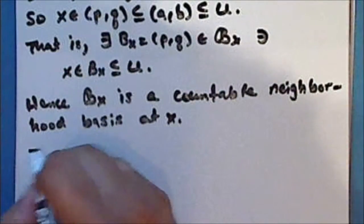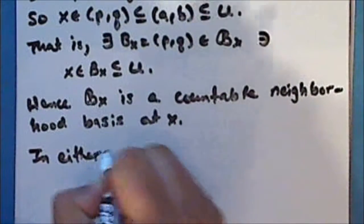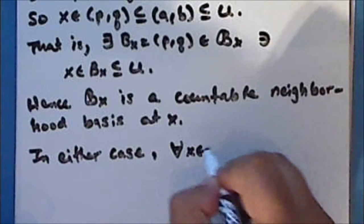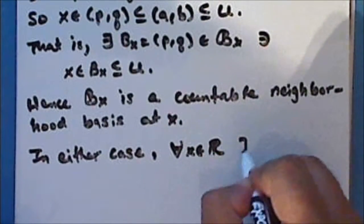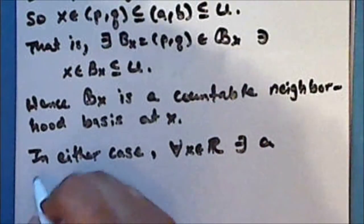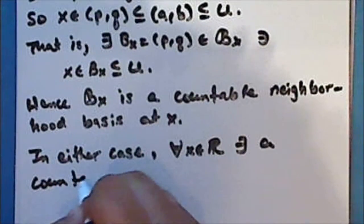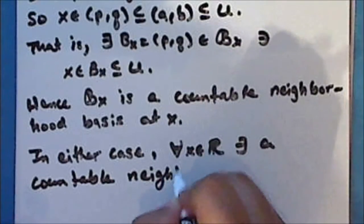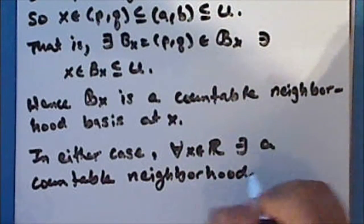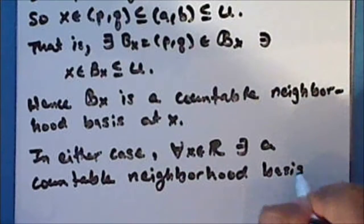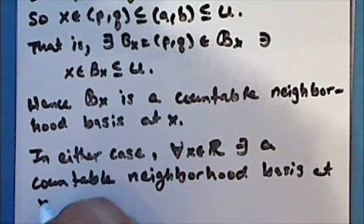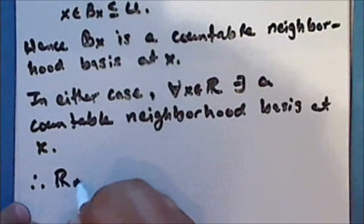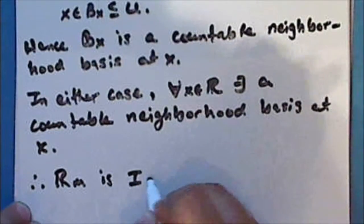And so, in either case, for every real number x, there exists a countable neighborhood basis at the point x. And therefore, the Michael line is first countable.